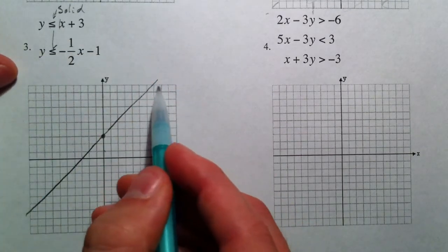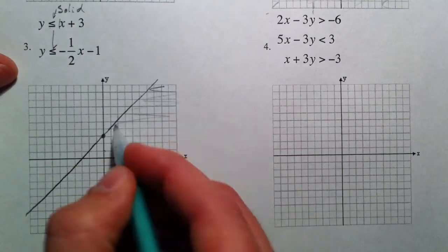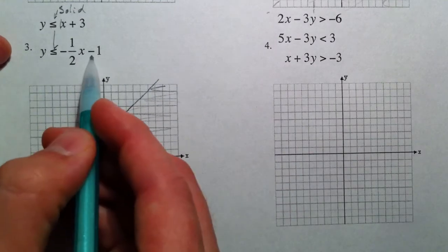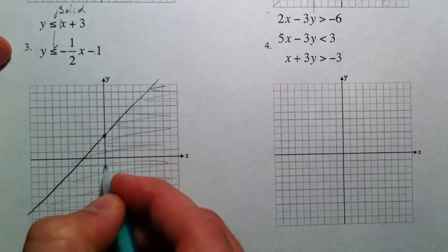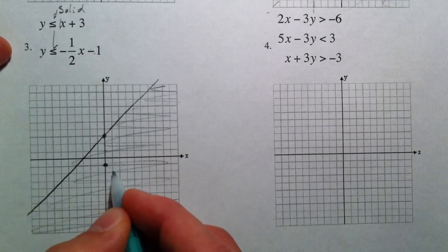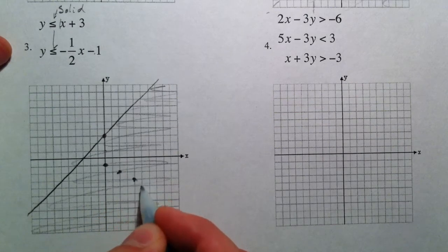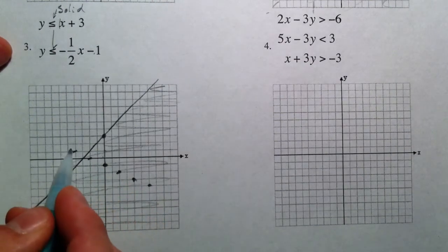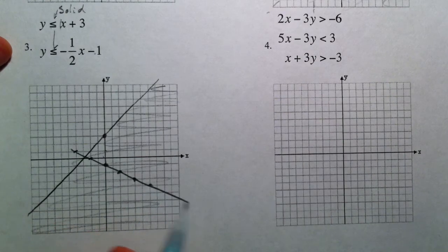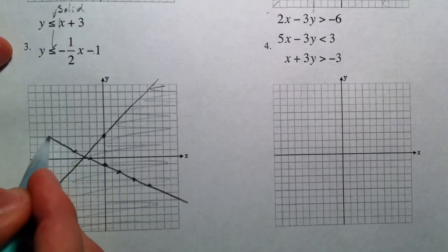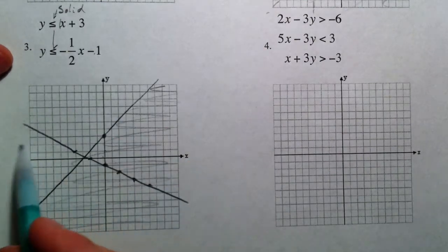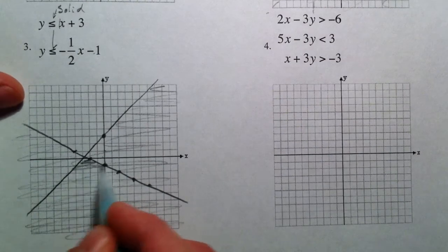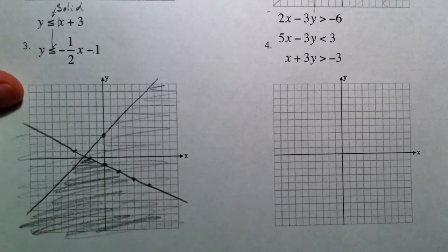So Y is less than that. So we're going to shade below the line. So all the Y values less than that line are below. And negative 1 is the Y-intercept. And negative 1 half. So down 1 over 2. Down 1 over 2. You could continue the pattern the other way if you wanted to. Up 1 and to the left 2 instead. And we're shading below that line as well. And so where the overlap happens is below both lines. And that is our solution set.